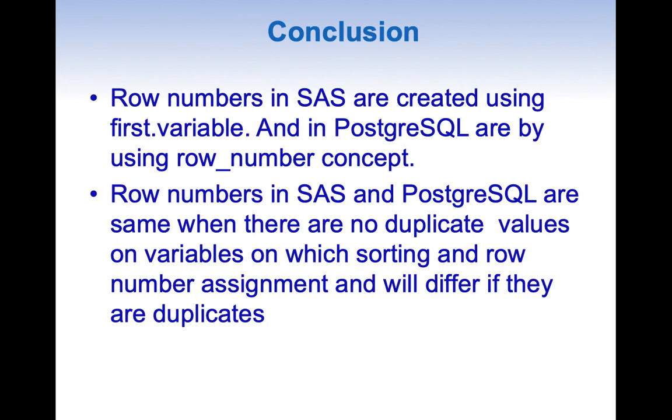Let me conclude this topic. Row numbers in SAS are created by using first dot and last dot variables. Whereas in postgres they are done using row underscore number. Row numbers in SAS and postgres are same when there are no duplicates on which sorting is done. Row numbers will be different whenever there are duplicate values. Extra care need to be taken whenever row number assignment is done when there are duplicate values on the variables on which sorting is done. This concludes the first topic in my SAS programming series. Thank you.